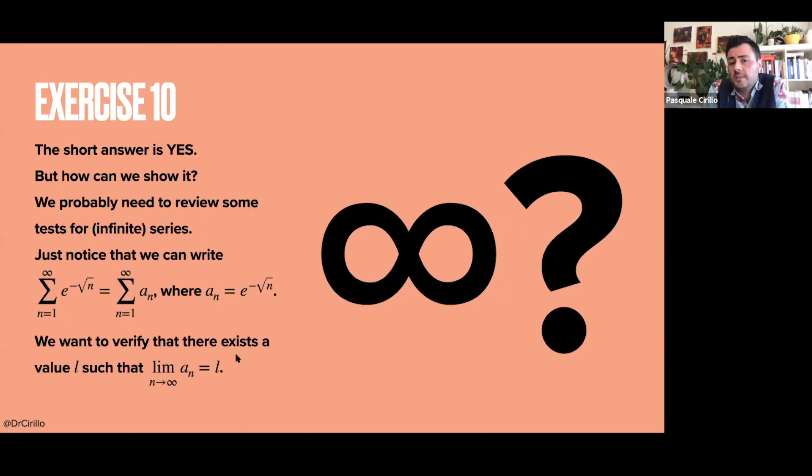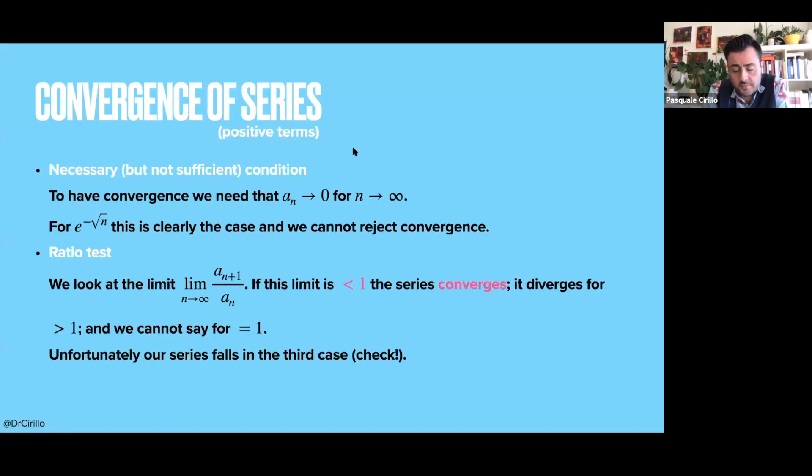Now, there are things that we have to check for that. There is a fundamental necessary condition that you have to check every time you are asked something like this, but it's not a sufficient condition. So if it is not satisfied, then you can say that there is no convergence. But if it is satisfied, there is no guarantee of convergence. So you still have to do something.